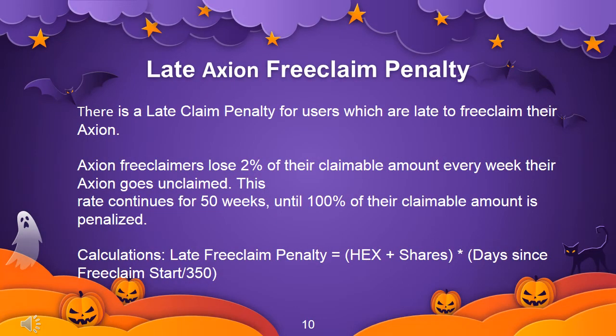Late Axion free claim penalty: There is a late claim penalty for users who are late to free claim their Axion. Axion free claimers lose 2% of their claimable amount every week their Axion goes unclaimed. This rate continues for 50 weeks, until 100% of their claimable amount is penalized. Calculation — late free claim penalty equals HEX shares multiplied by days since free claim start, divided by 350.